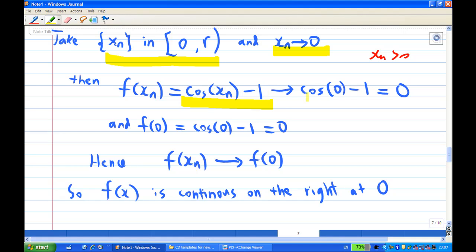Now, cosine xn will be converging to cosine zero by basic continuous function. So therefore f of xn converges to zero as well. But zero is also f of zero. Therefore f of xn converges to f of zero, and so f is continuous on the right at zero.